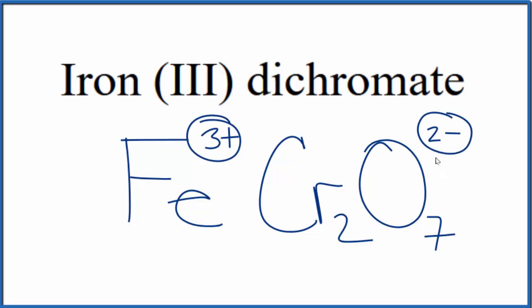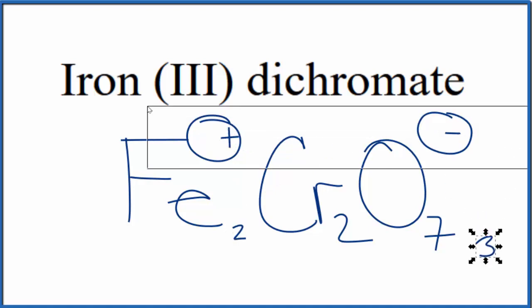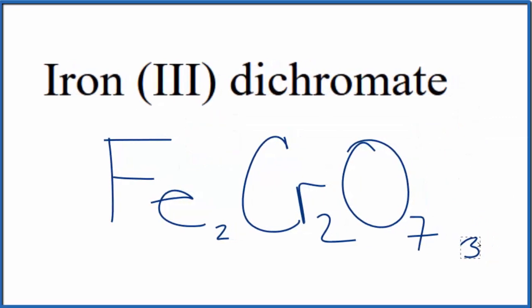We can use a little trick to help us do that. We could move the two down here and the three over here. Get rid of these. And since we have three of these dichromate ions, we do need to put parentheses around the dichromate ion.